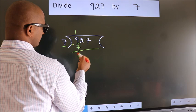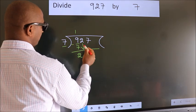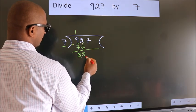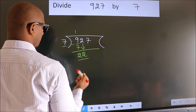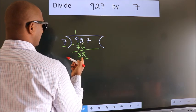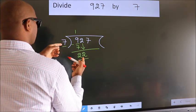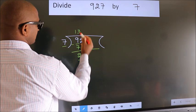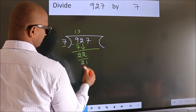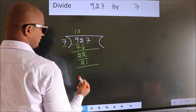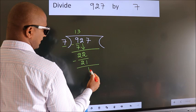After this, bring down the next number. 2 down, so 22. A number close to 22 in the 7 table is 7 threes, 21. Now we subtract. We get 1.